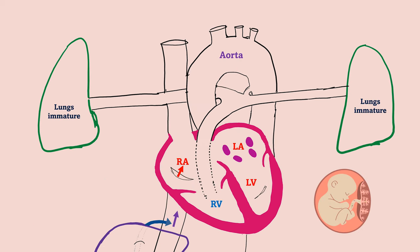Most of the blood bypasses from the right atrium to the left atrium through the foramen ovale because the lungs are immature and not functional.